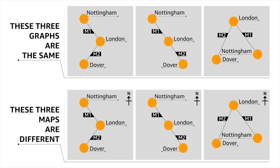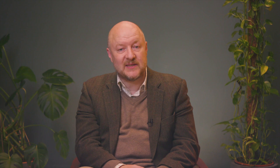To explain the difference — and it's important to understand that maps are not the same as graphs — the three images at the top are all identical, and they're all graphs: three different locations connected by two roads. The three images at the bottom are all completely different; they're all maps — again, three locations connected by two roads. The fundamental difference between a map and a graph is that in a map, space has meaning, which is why they're very useful for looking at landscapes, whether territorial or economic landscapes.